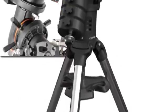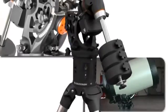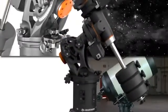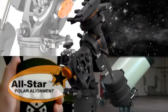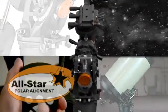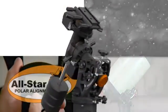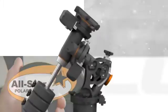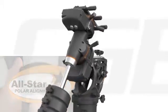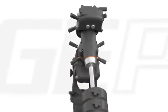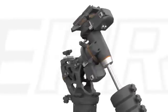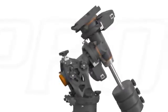With increased payload capacity, faster slew speeds, more accurate tracking, and the groundbreaking All Star Polar Alignment, Celestron's state-of-the-art CGE Pro German Equatorial Mount is a highly capable, reliable, and accurate platform designed to fit the needs of any serious observer or astrophotographer.